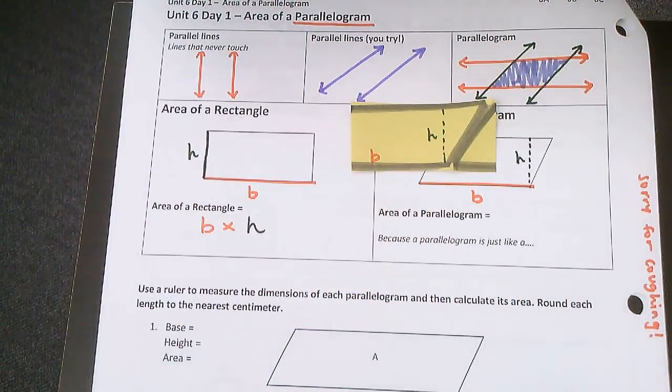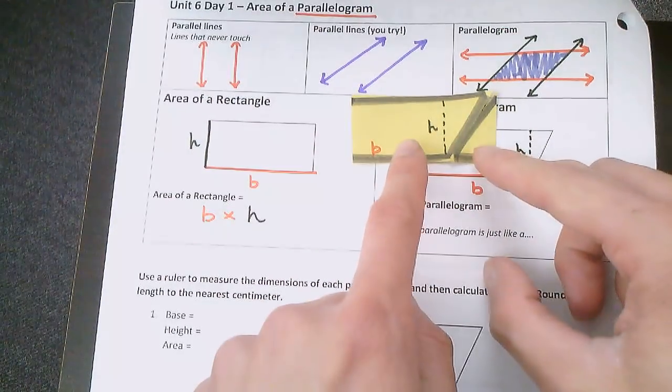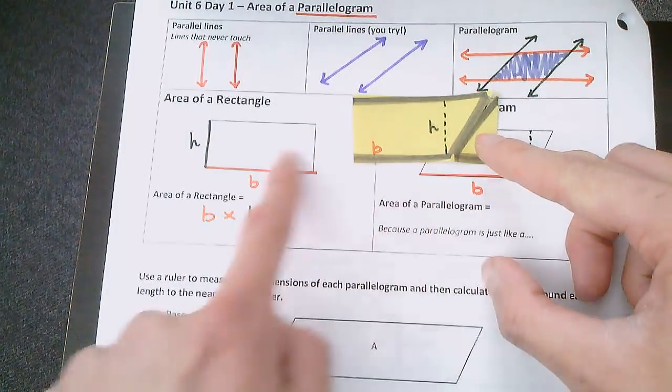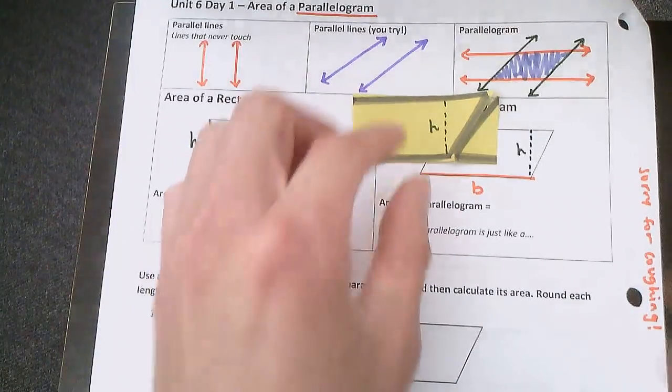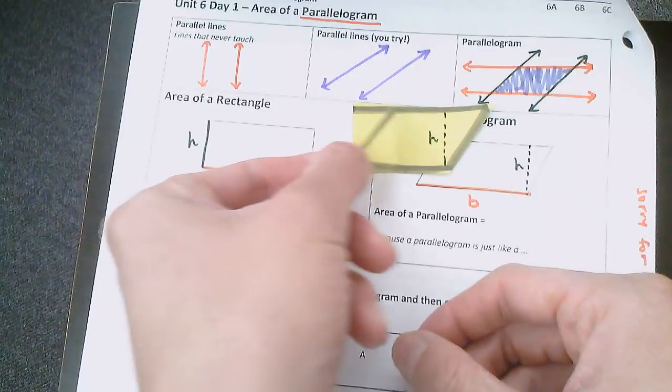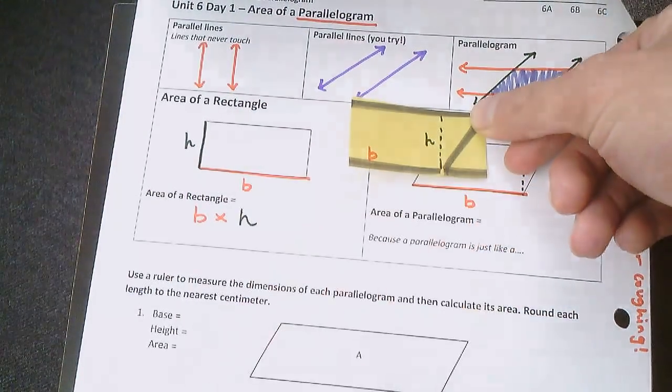What do I have now? Right now, my parallelogram, I have just rearranged it. And now it's just a rectangle again. If you just take part of your parallelogram and rearrange it, now it becomes a rectangle.